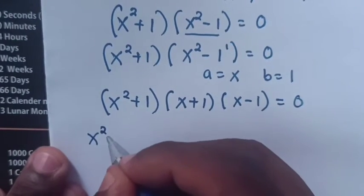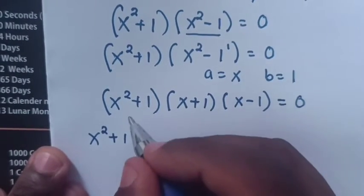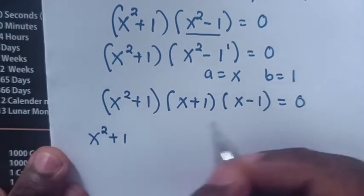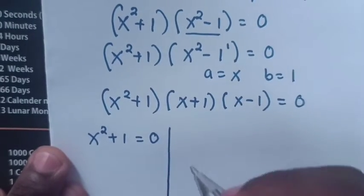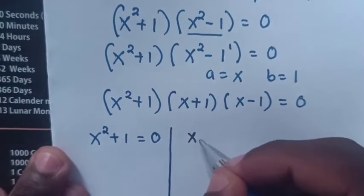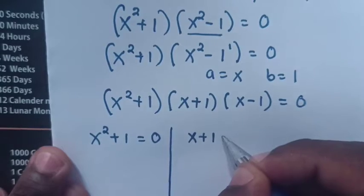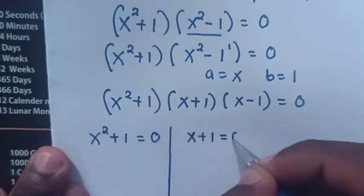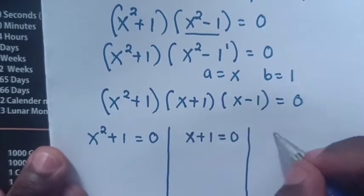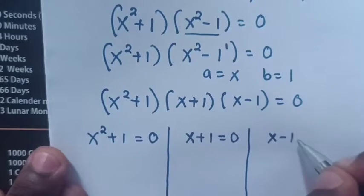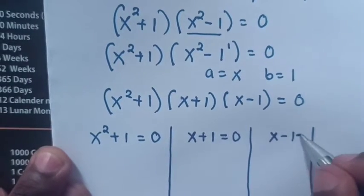Now we find the value of x from each factor: x² + 1 = 0, x + 1 = 0, and x - 1 = 0.